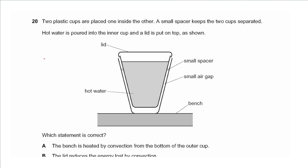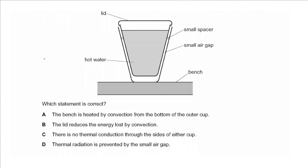Question 20 shows two plastic cups placed one inside the other with a small spacer. Hot water is poured into the inner cup with a lid on top. The bench is not heated by convection because hot fluids rise upwards. The lid reduces energy lost by convection by preventing convection currents — yes, that is correct. Thermal radiation cannot be prevented, only reduced, so the answer is B.